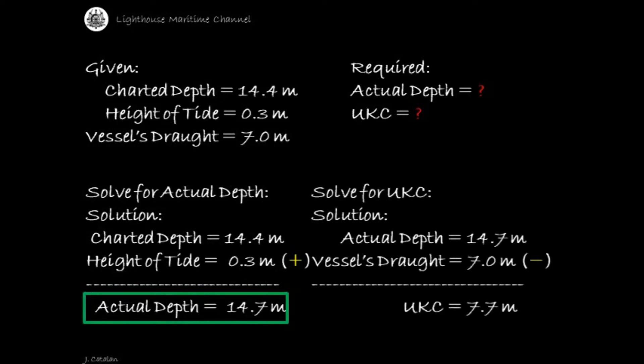Solve for under keel clearance. Solution: actual depth (14.7 meters) subtracted by the vessel's draft (7.0 meters). The result is the under keel clearance, which is equal to 7.7 meters.